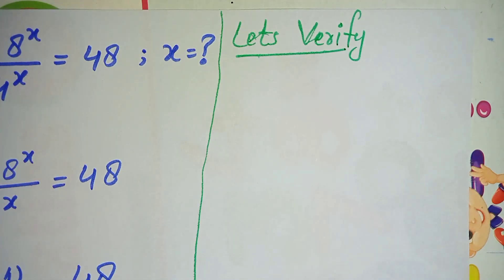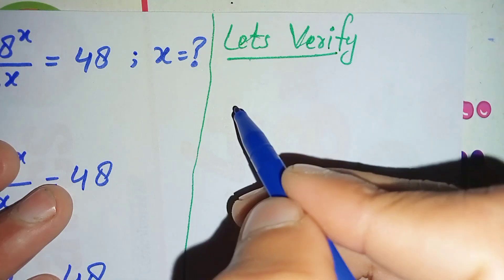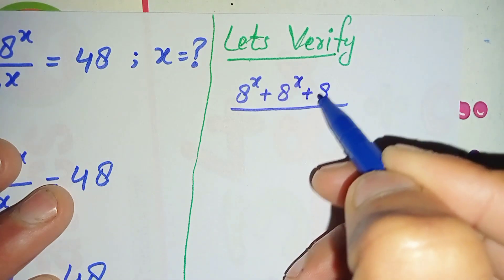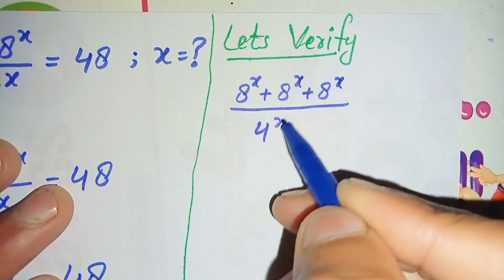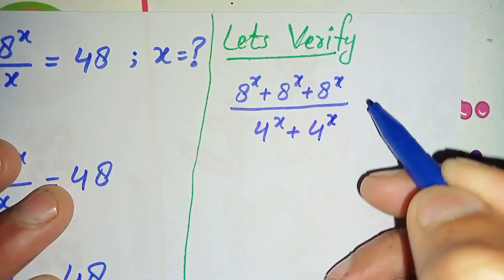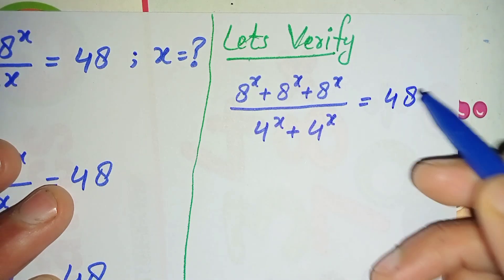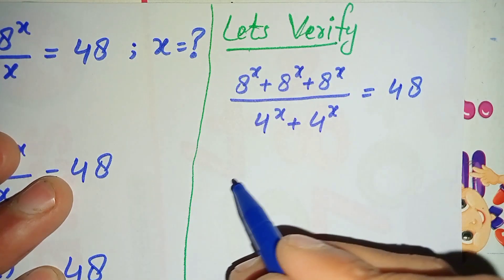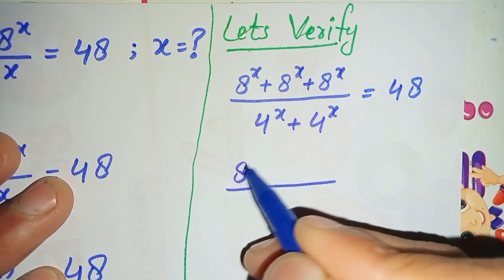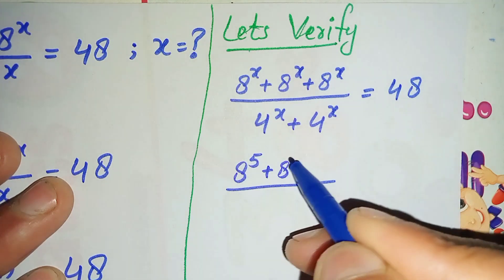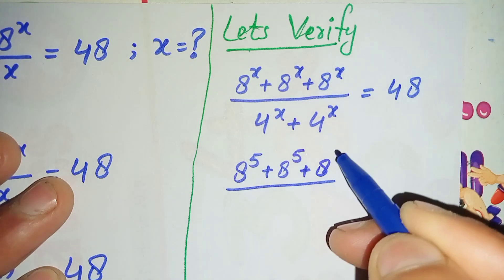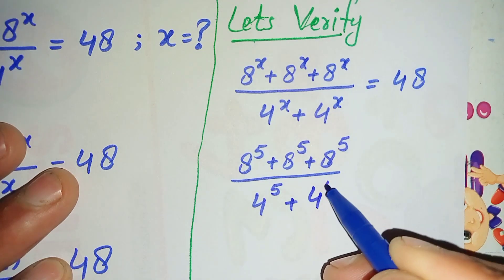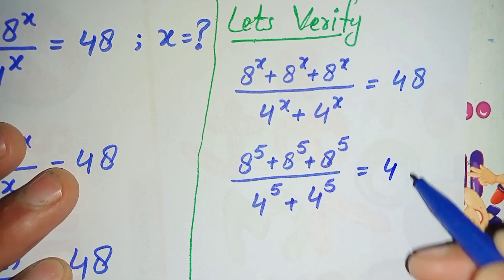Now we will verify that x equals 5 is the exact and correct root. To verify, we rewrite the original equation: 8 raised to power x plus 8 raised to power x plus 8 raised to power x, divided by 4^x plus 4^x, is equal to 48. We replace x with 5 throughout the equation.